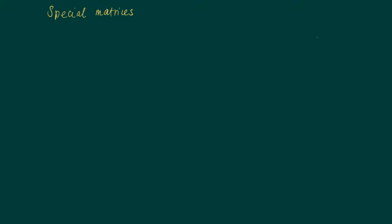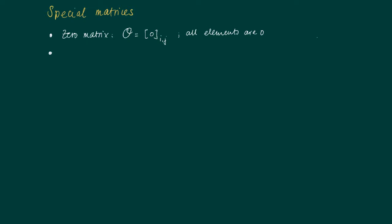We introduced matrices as rectangular tables of numbers. Of course we also have special matrices. For instance, the zero matrix has only zero entries. We can denote a matrix such that the element in row i, column j is zero — all elements are zero.